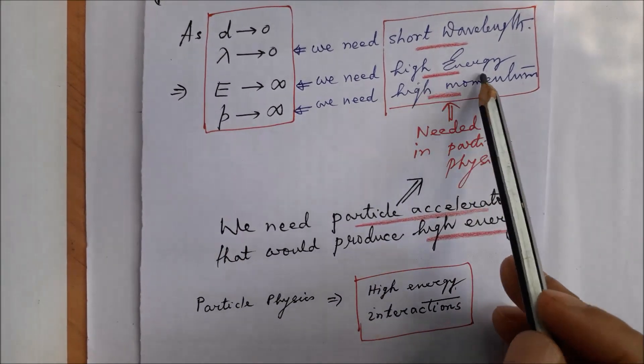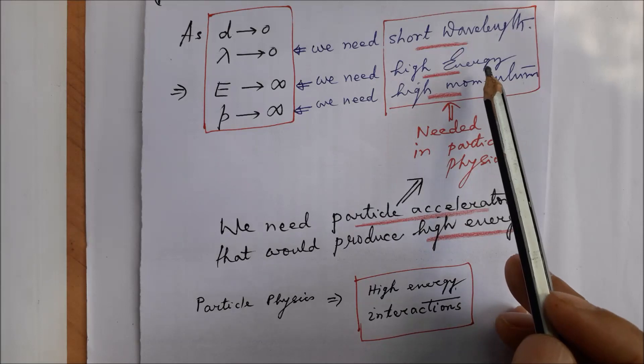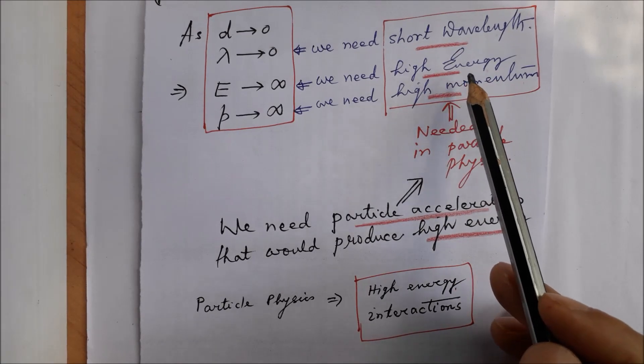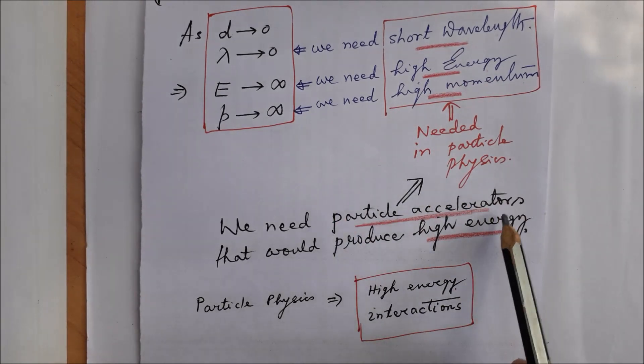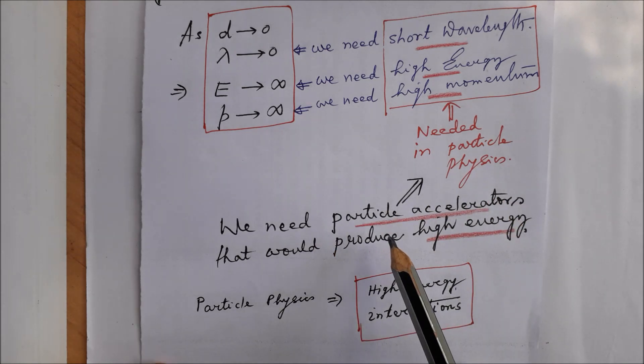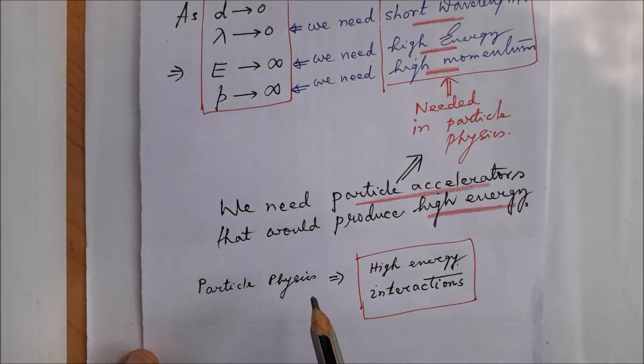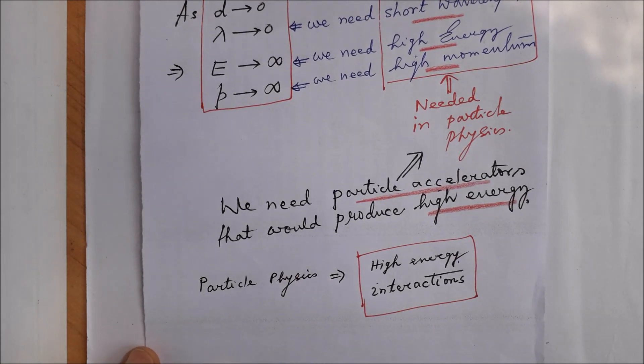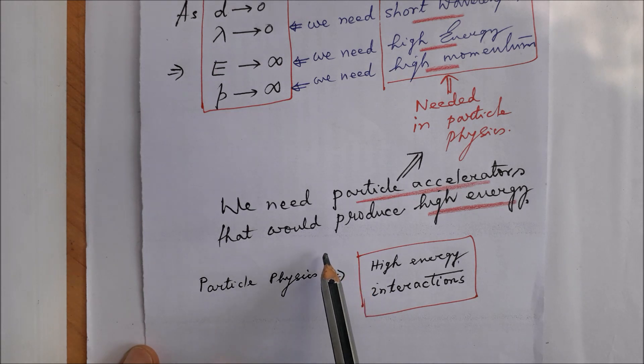Now how is that high energy created? High energy is created with the help of particle accelerators. So what we have emphasized in this lecture is that particle physics involves high energy interactions. The reasons behind it has been described here.